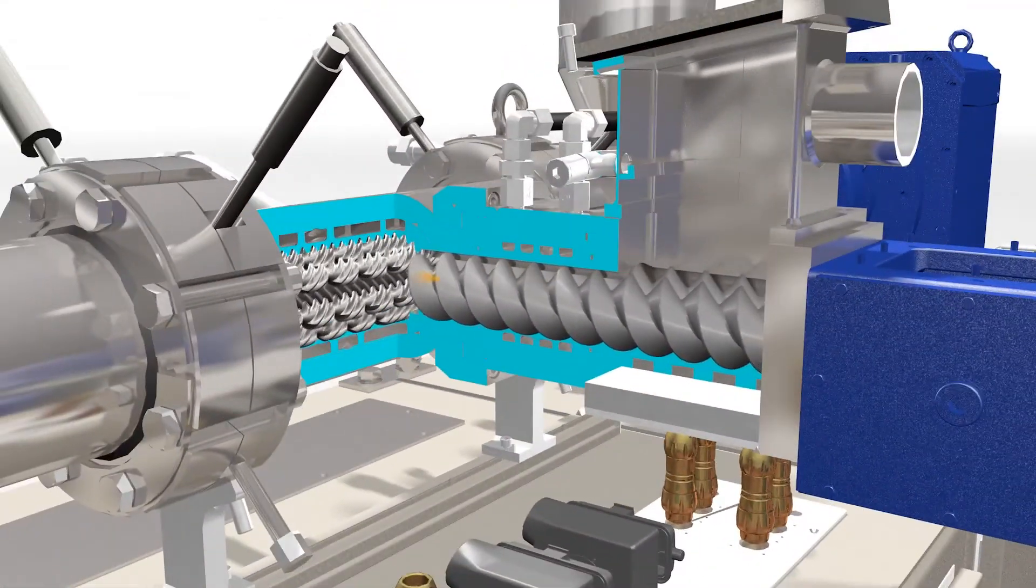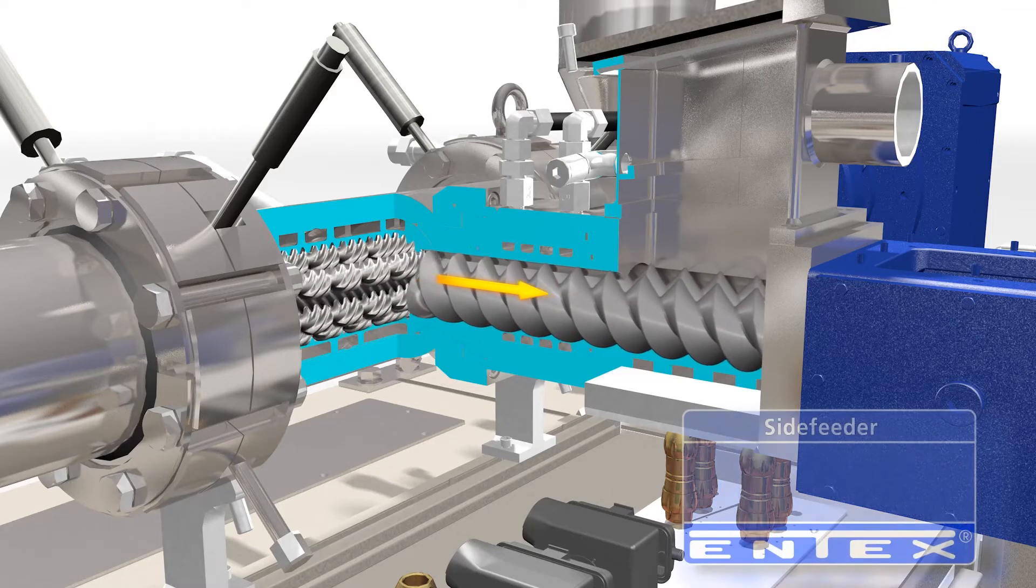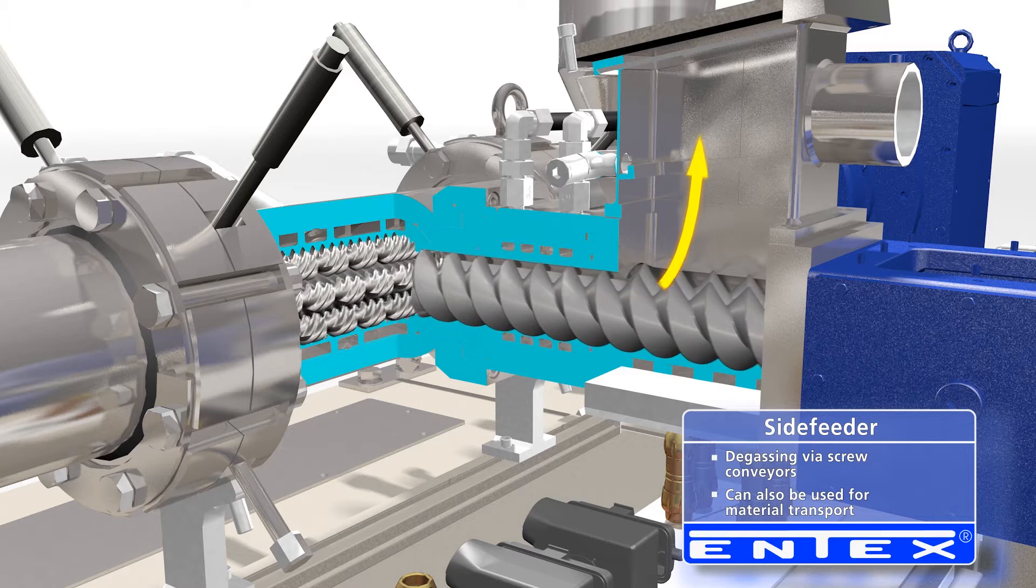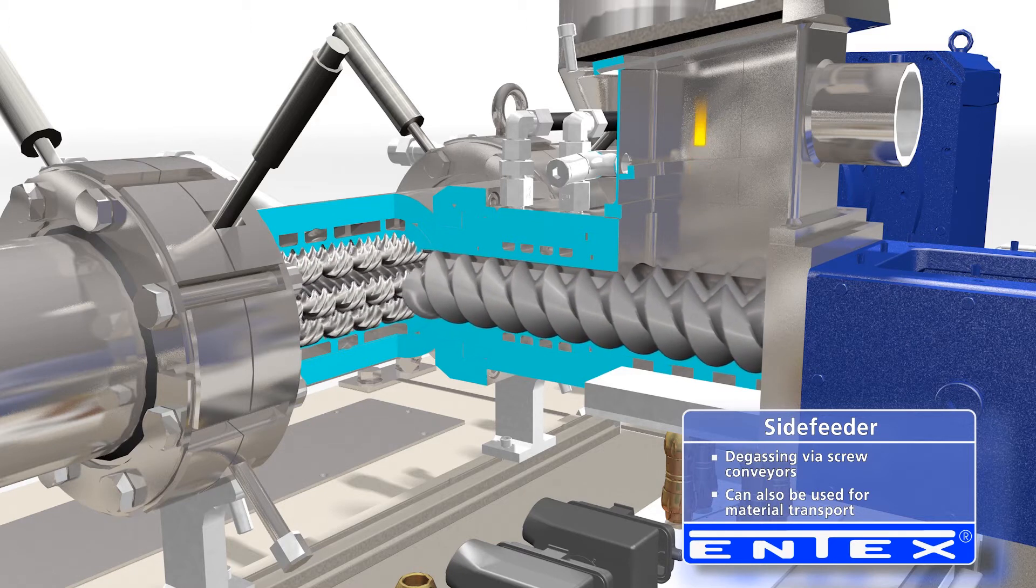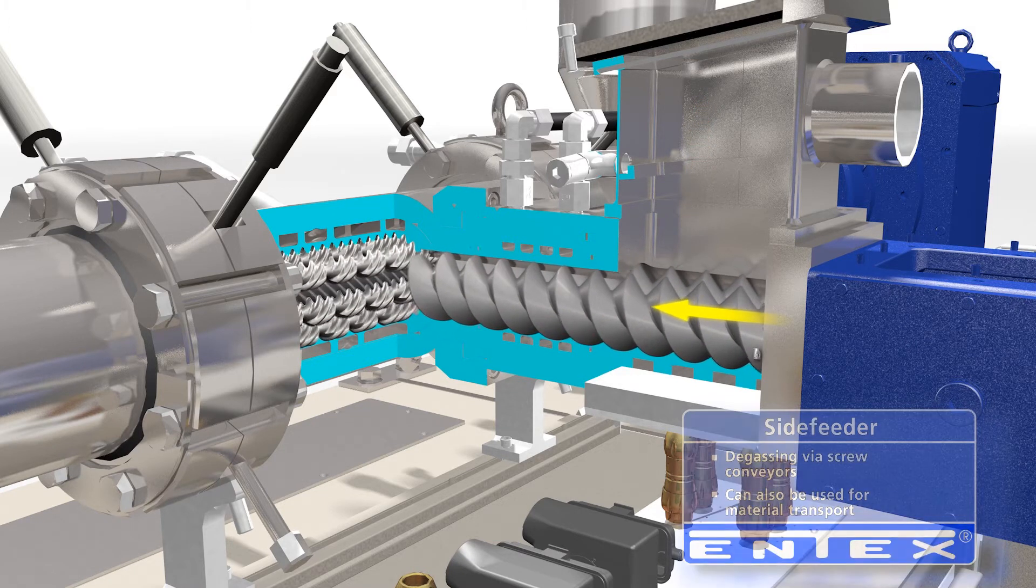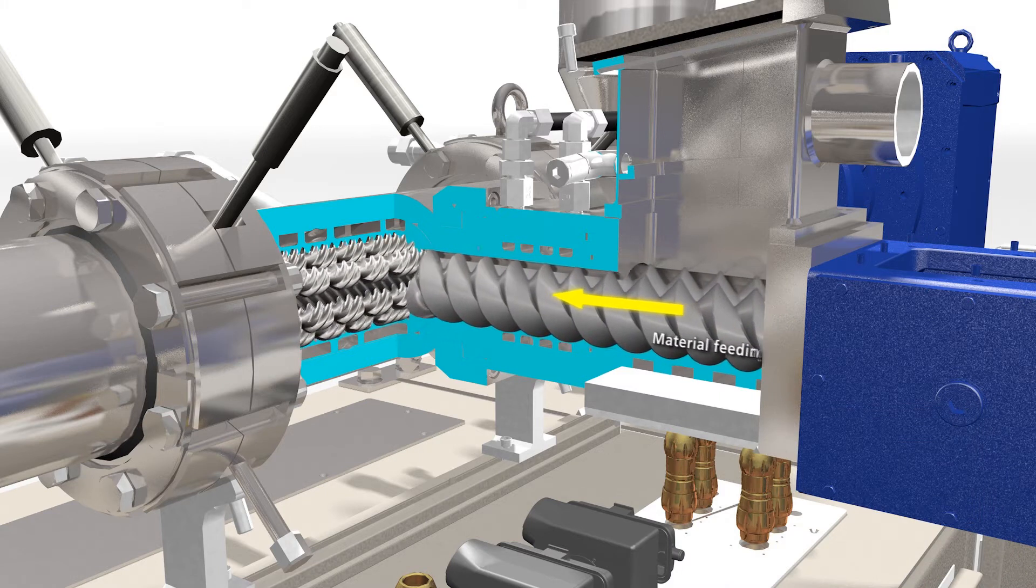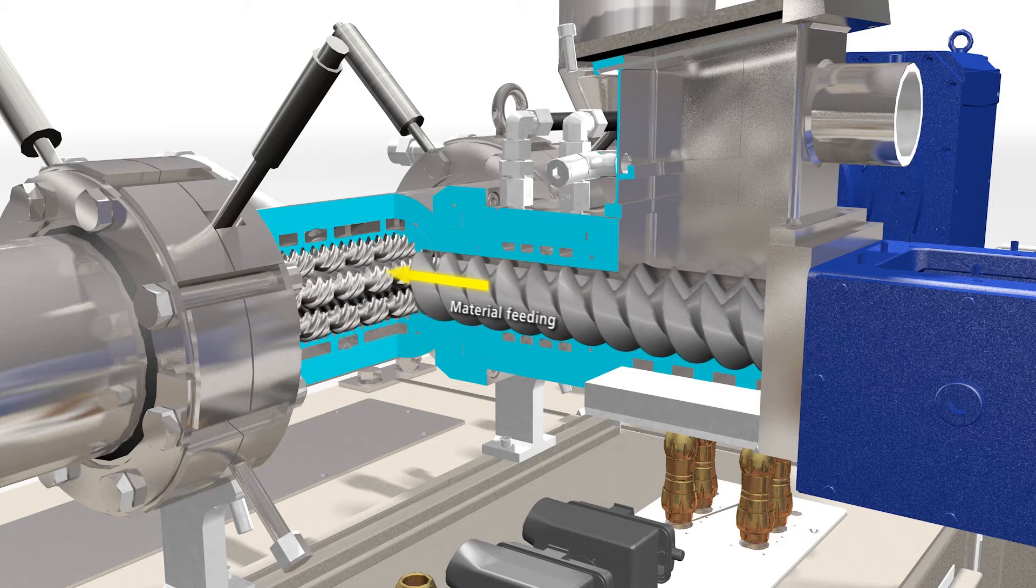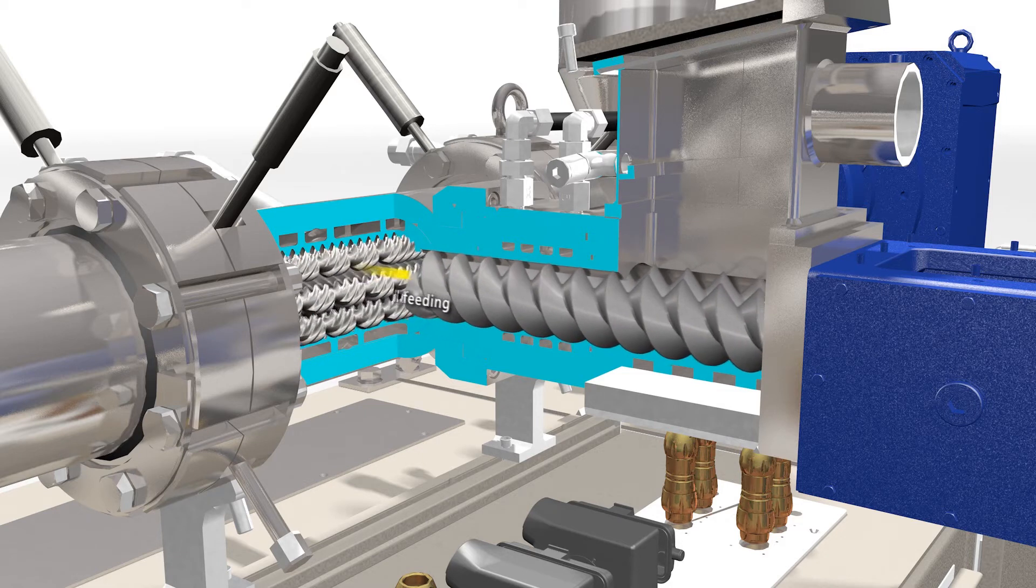Via a side feeder, material can be evacuated or supplied. Thus, the volume in the planetary roller extruder can be precisely adjusted via the spindle trimming by the number and shape of the spindles. Space is created, for example, during degassing by reducing the spindle trimming to a minimum.